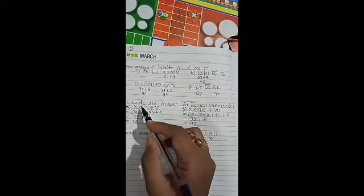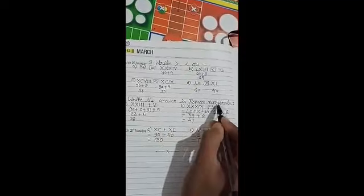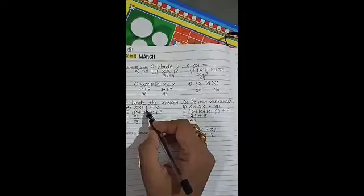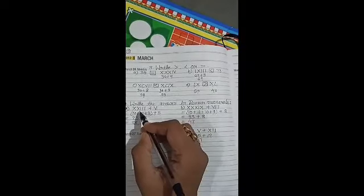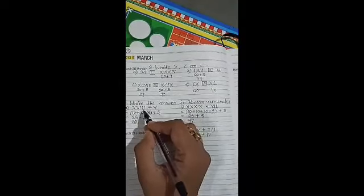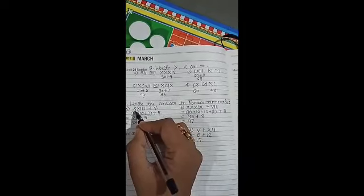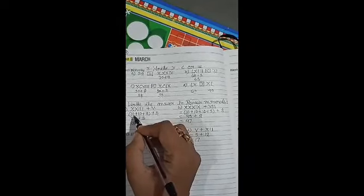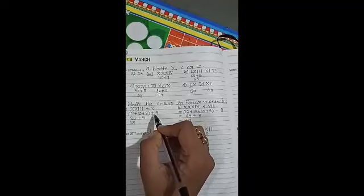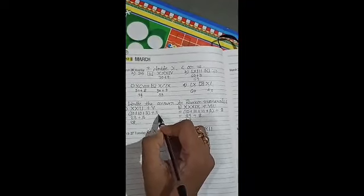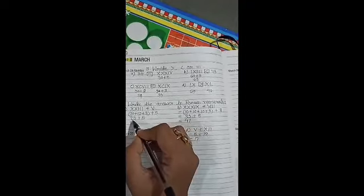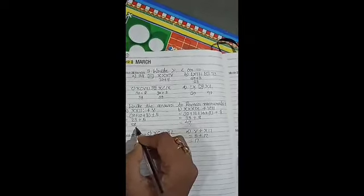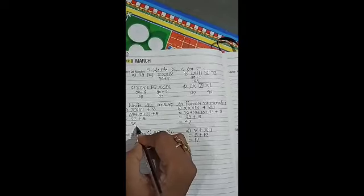Now, question number 4. Write the answer in Roman numerals. Question number A. XXXIII plus V. First, we will convert Roman form to numeral form. Here, X is 10. 10 plus 10 plus 3 means 23. Plus V is 5, so plus 5. 23 plus 5, that is 28. Okay?